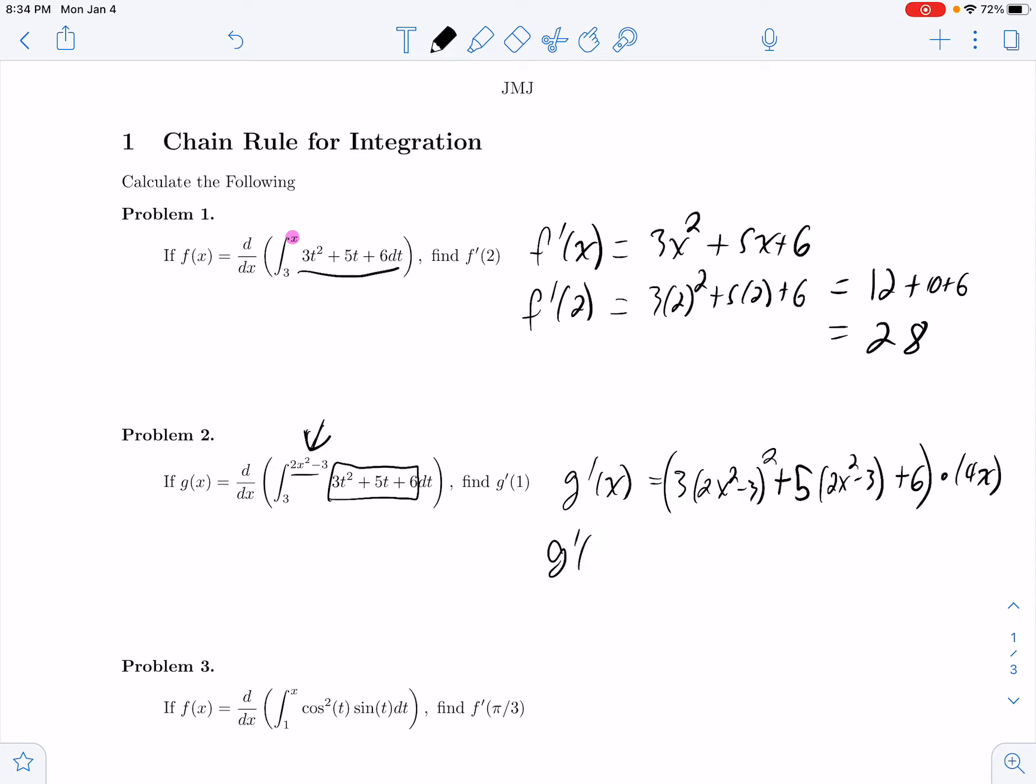So I want to do g prime of 1. That's going to be 3 times (2 times 1 squared minus 3) squared plus 5 times (2 times 1 squared minus 3) plus 6 times 4 times 1, which then is equal to 3 times negative 1 squared plus 5 times negative 1 plus 6 times 4.